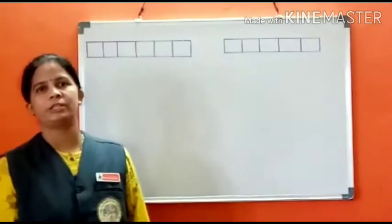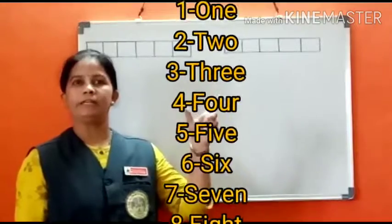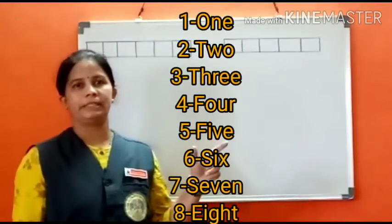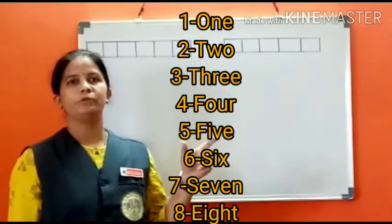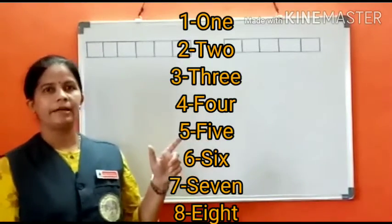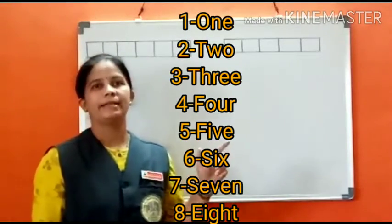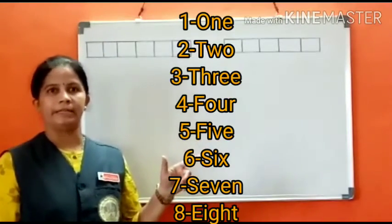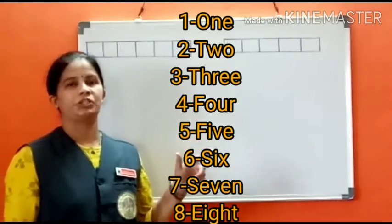Shall we repeat those number names children? O-N-E-1, T-W-O-2, T-H-R-E-3, F-O-U-R-4, F-I-V-E-5, S-I-X-6, S-E-V-E-N-7, E-I-G-H-T-8.